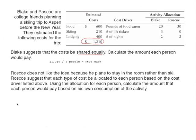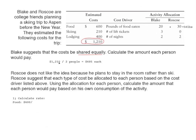The first step in activity based costing is to calculate the rate for each activity. For food, the total cost is $600. Blake anticipates eating 20 pounds of food and Roscoe anticipates eating 30 pounds, for a total of 50 pounds. So the allocation rate is $600 divided by 50 pounds, which gives us $12 per pound of food. For each pound eaten, Blake and Roscoe will pay $12 in cost.